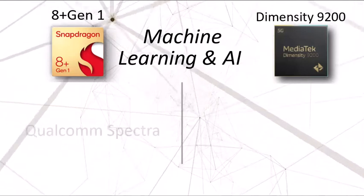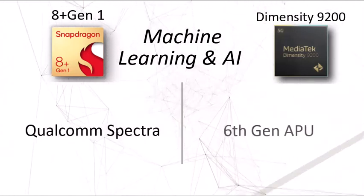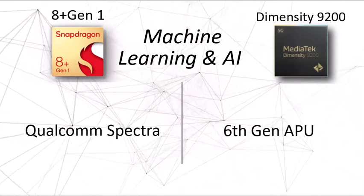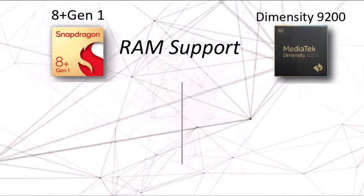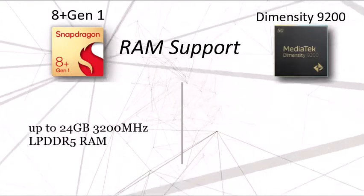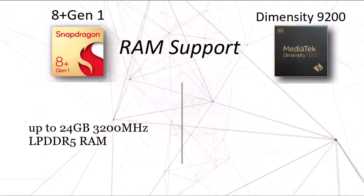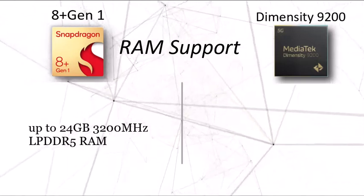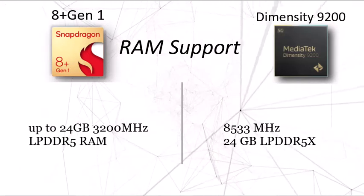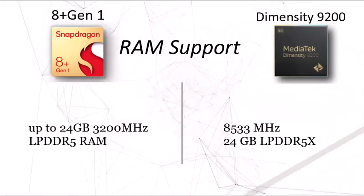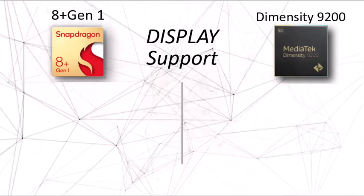For machine learning and AI, Qualcomm comes with their in-house Qualcomm Spectra, whereas MediaTek comes with the 6th Gen APU. For maximum RAM support, the Dimensity leads — the Snapdragon supports LPDDR5 RAM, whereas the MediaTek has been updated to support up to 24GB of LPDDR5X RAM with increased frequencies.